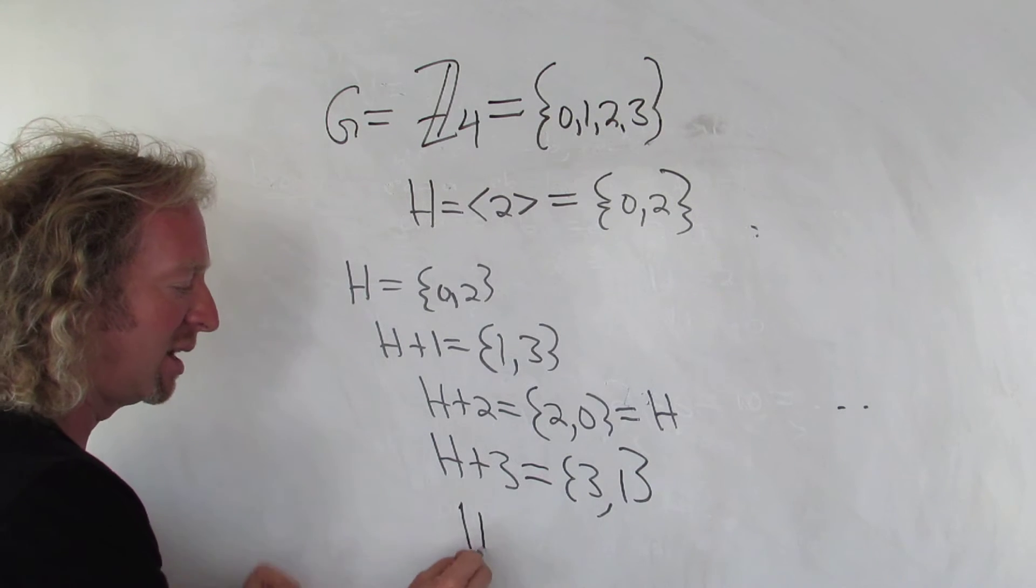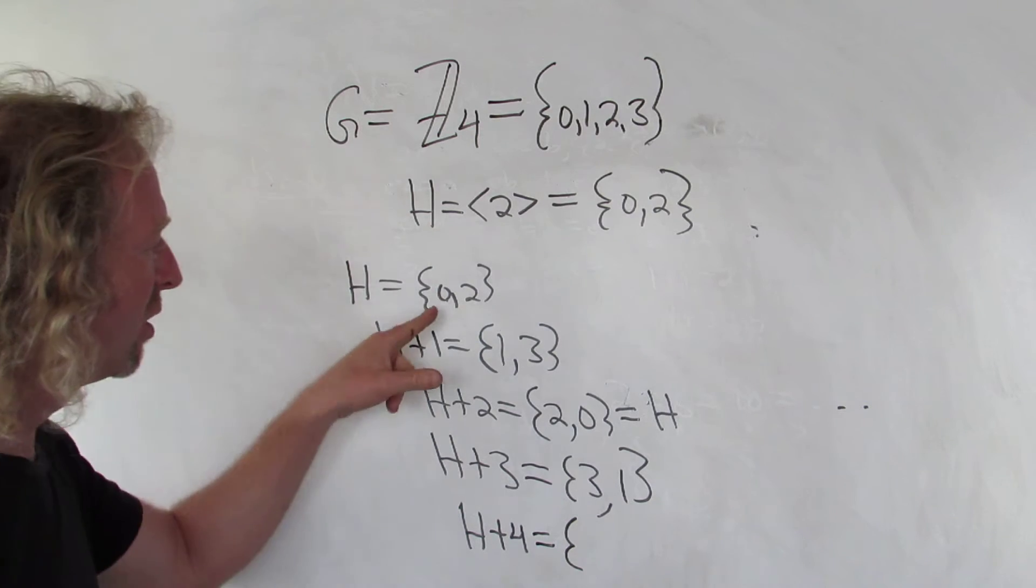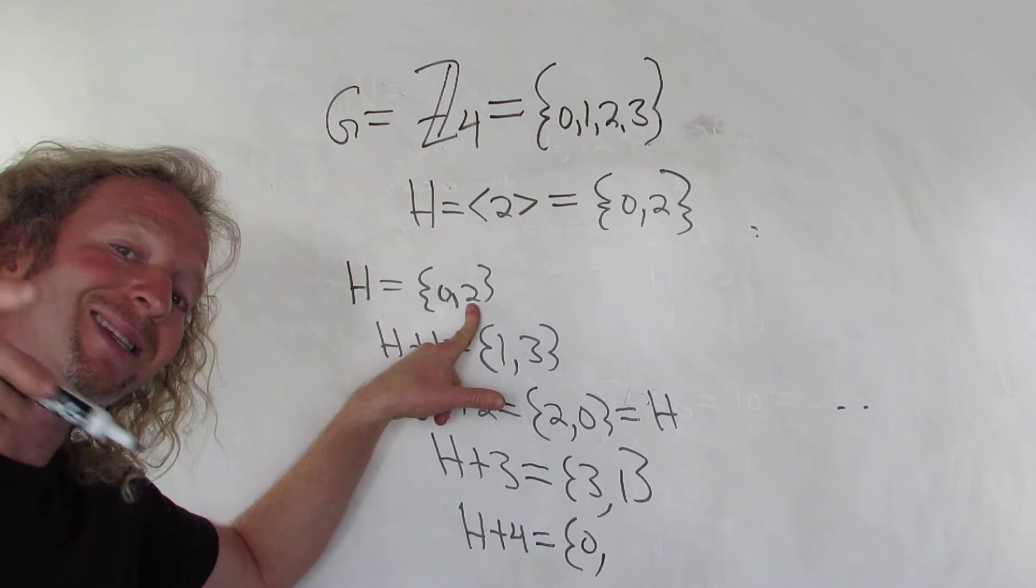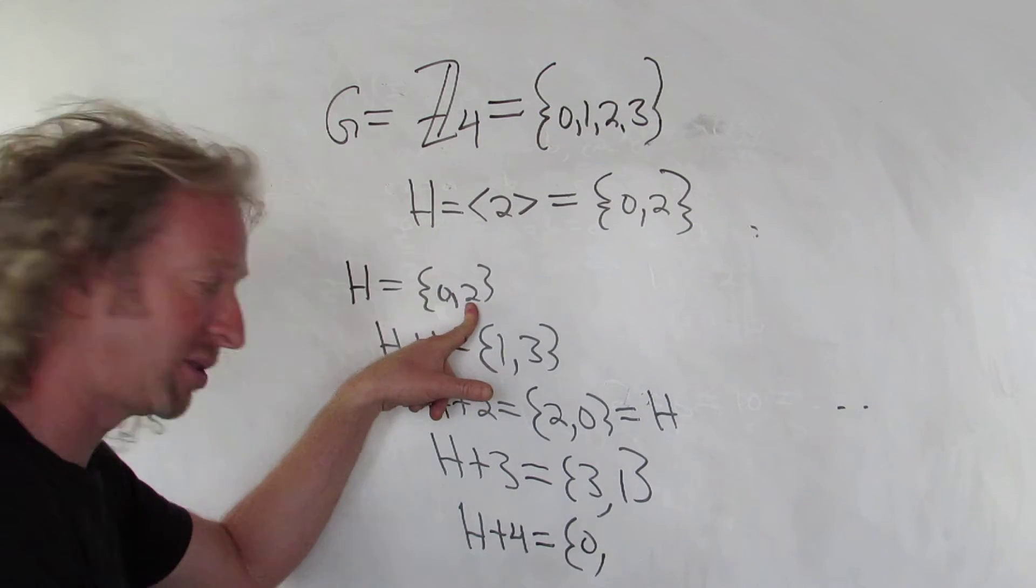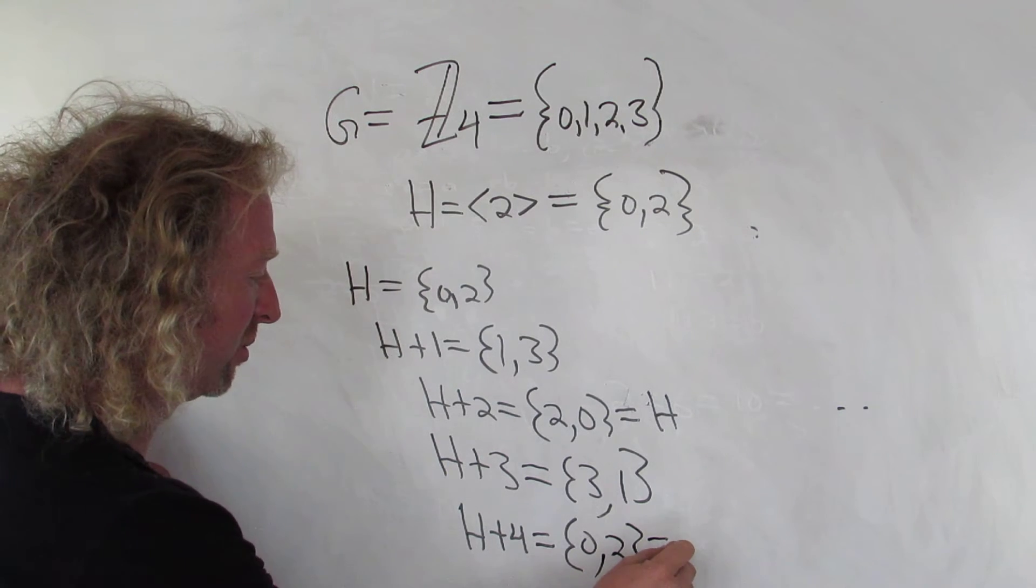Let's do another one, I think that's going to be it. If we do H plus 4, we get 0 plus 4, which is 4, which is 0. We get 2 plus 4, which is 6. And so that's actually equal to 2. So this is equal to the same thing as H.